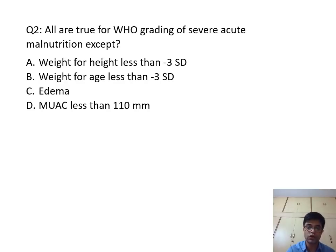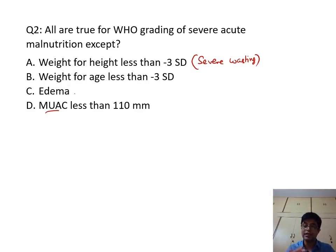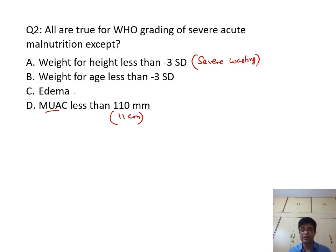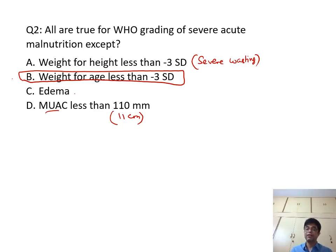Question number 2: All of the following are true for WHO grading of severe acute malnutrition except. Weight for height less than minus 3 standard deviations is a criteria, also called severe wasting. Presence of symmetrical edema is one of the criteria. Mid upper arm circumference less than 11.5 cm is a criteria. The odd one out is weight for age less than minus 3 standard deviations — weight for age as a standalone criteria is not used to define severe acute malnutrition.